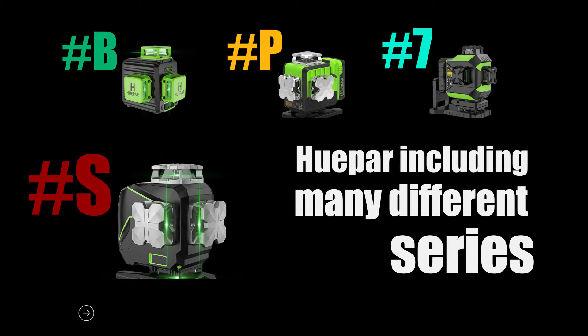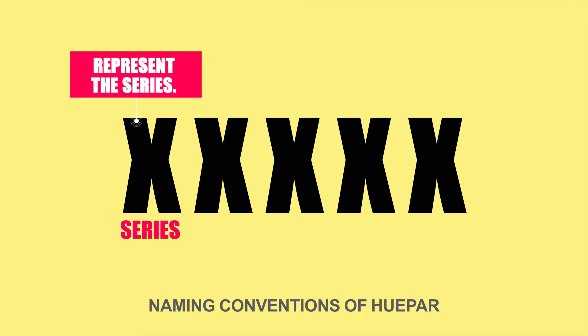To start with, Huepar includes many different series such as the S series, P series, 7 series, B series and so on. The first letter represents the series.